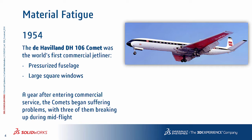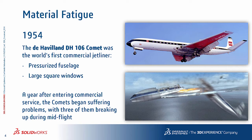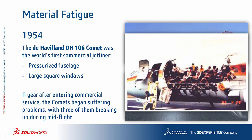To understand where the concept of fatigue failure came from, let's take a trip back in time. The year is 1954. The De Havilland Comet was the world's first commercial jetliner. One of its specificities was that it had a pressurized fuselage and large square windows. A year after entering commercial service, the Comet began suffering problems, with three of them breaking up during mid-flight. The cause was metal fatigue in the airframe. The first incident had been incorrectly blamed on bad weather, but the culprit was really design flaws, including dangerous stresses at the corners of the square windows. Fast forward to today, the aircraft industry learned from those mistakes and now all commercial pressurized aircraft have round windows for a reason.